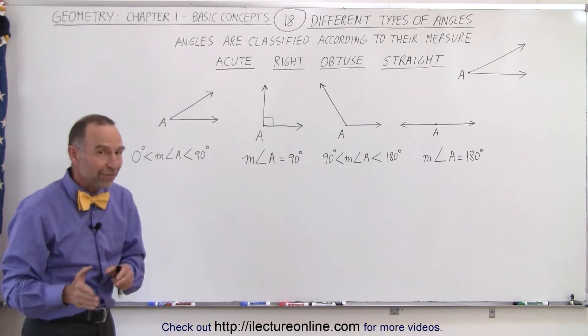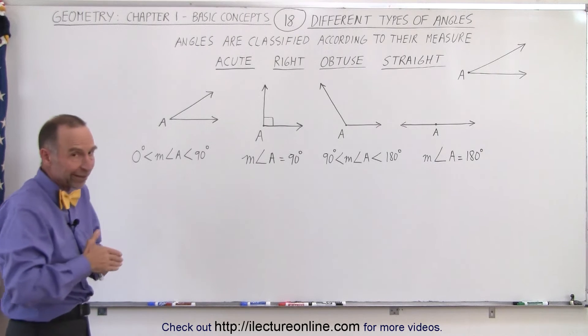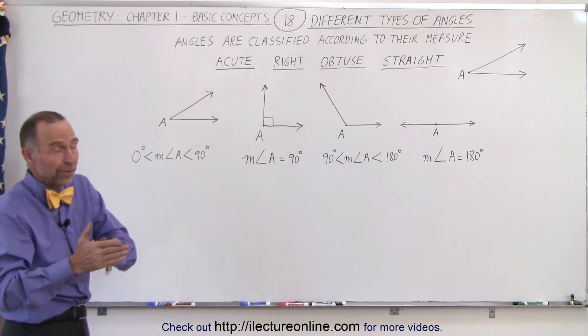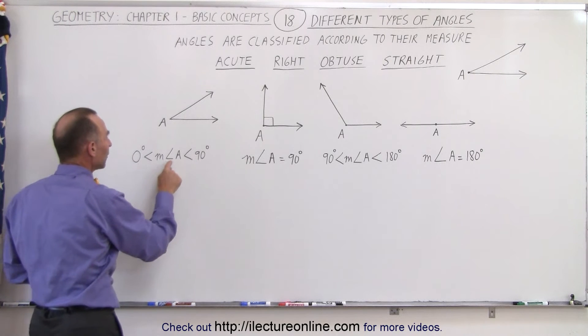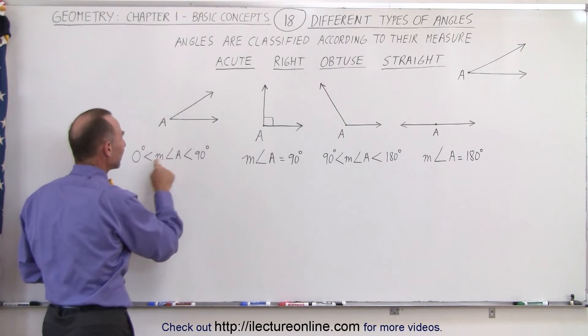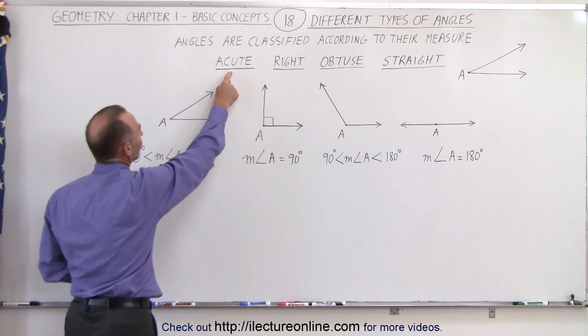Now what happens if the angle is less than 90 degrees but greater than 0 degrees? If the angle is 0 degrees you don't have an angle. So if the measure of the angle is between 0 degrees and 90 degrees it's called an acute angle.